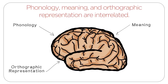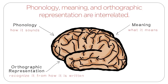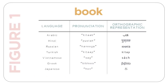Your mind is like a dictionary where the phonology, meaning, and orthographic representation of different words are represented. When you read a word, you try to recognize it from how it is written, and you also think about how it sounds and what it means. In other languages, the word for 'book' can mean the same thing, but the way it is said and written is different. Figure 1 shows the word 'book' in seven languages.